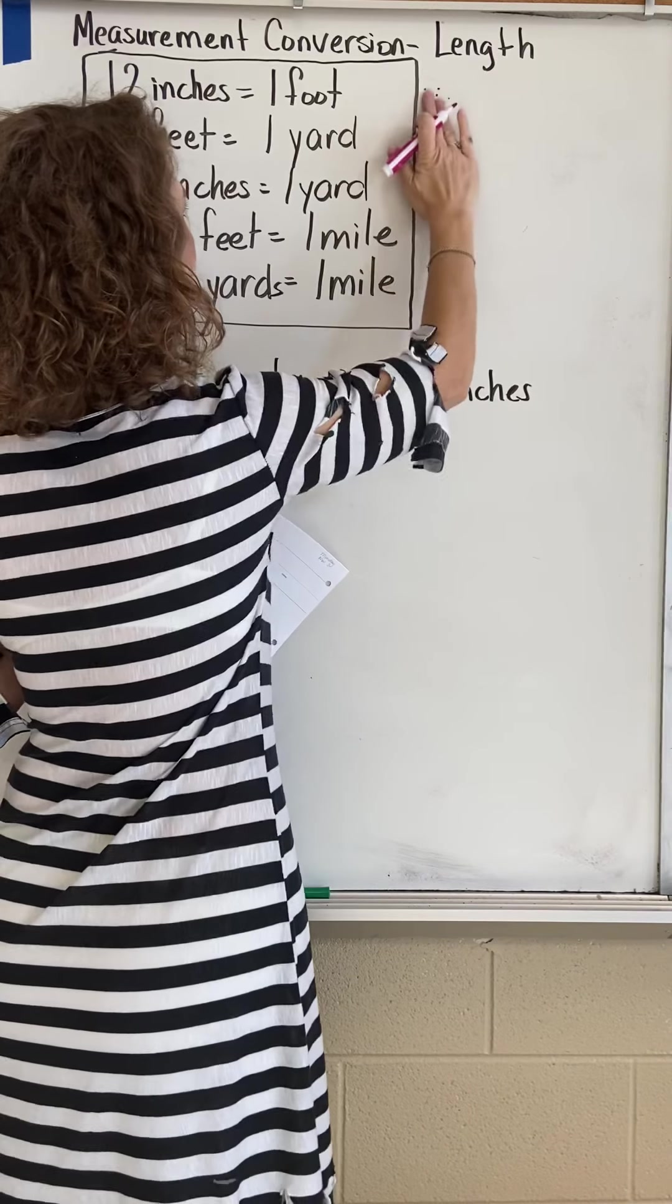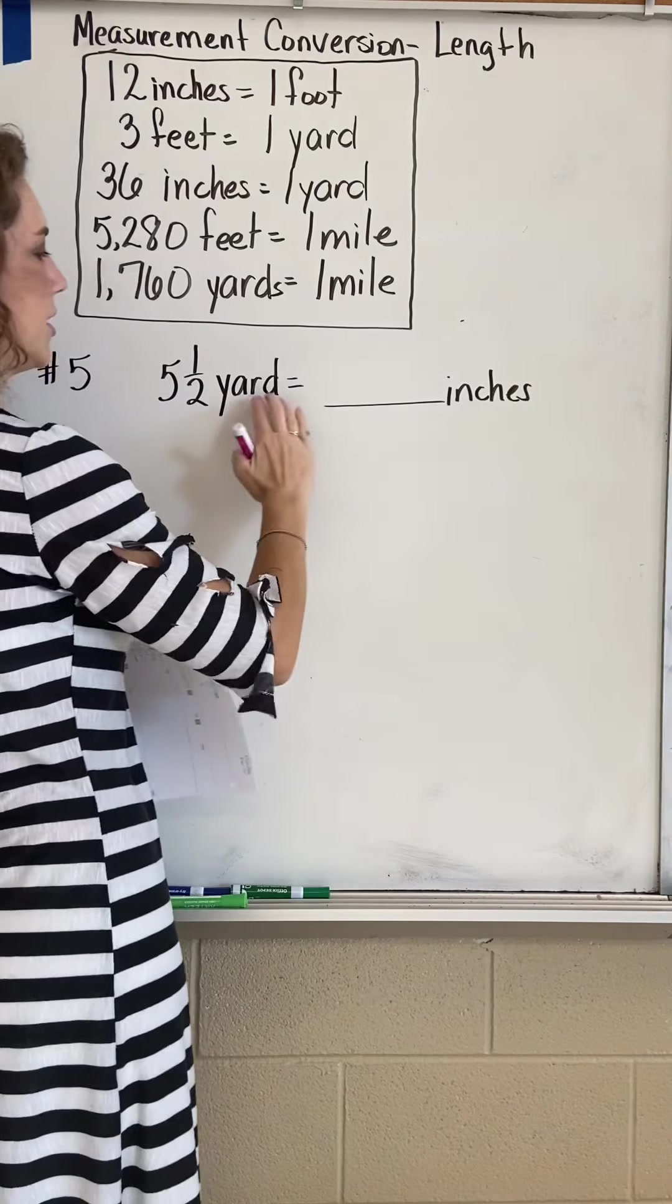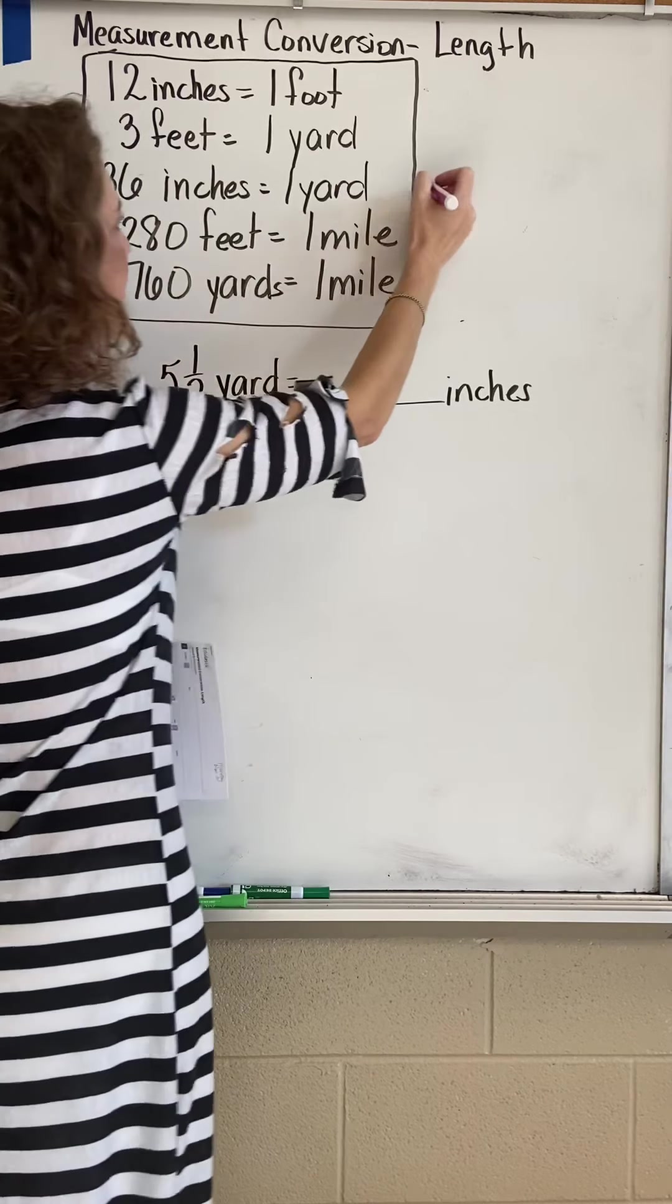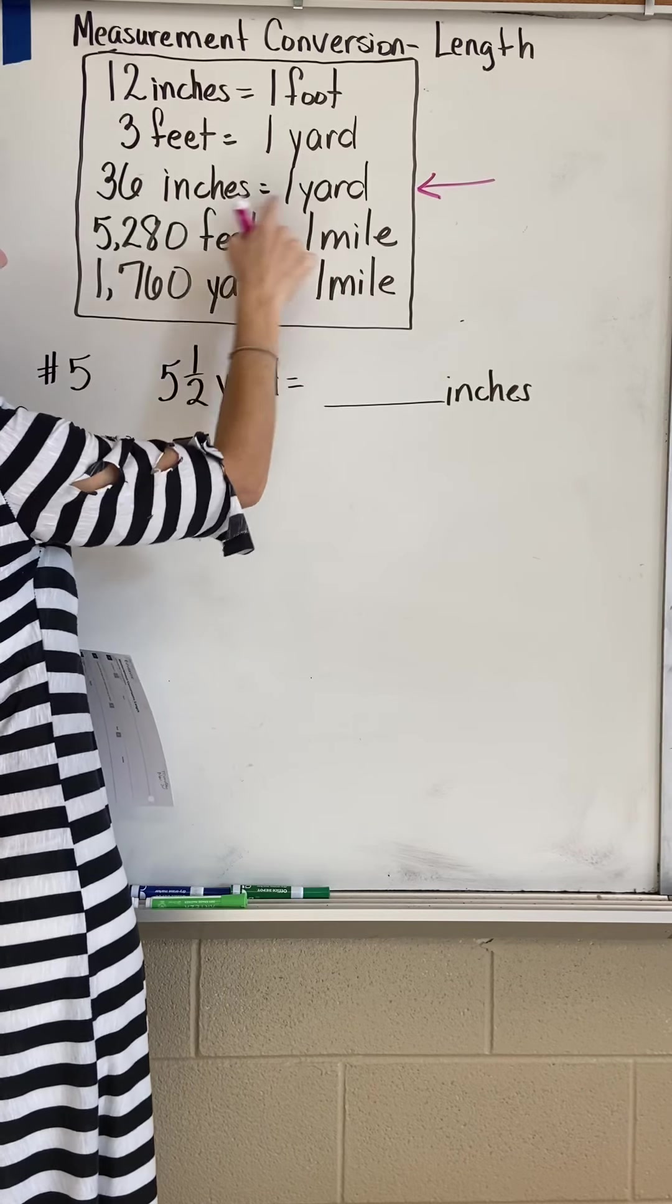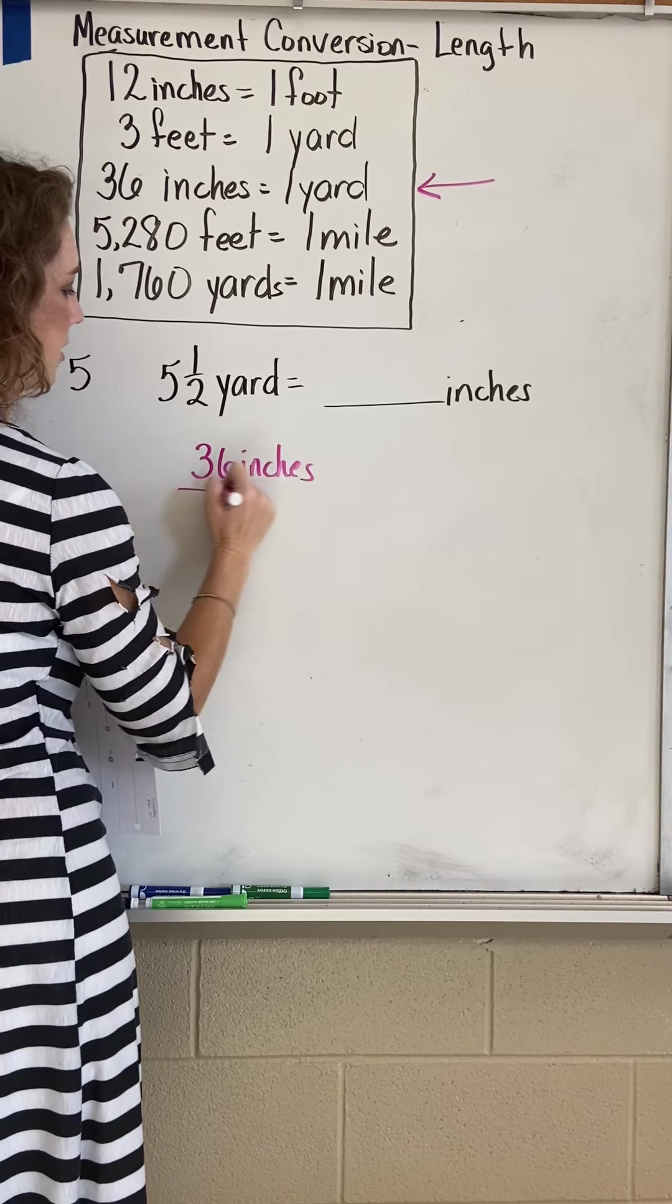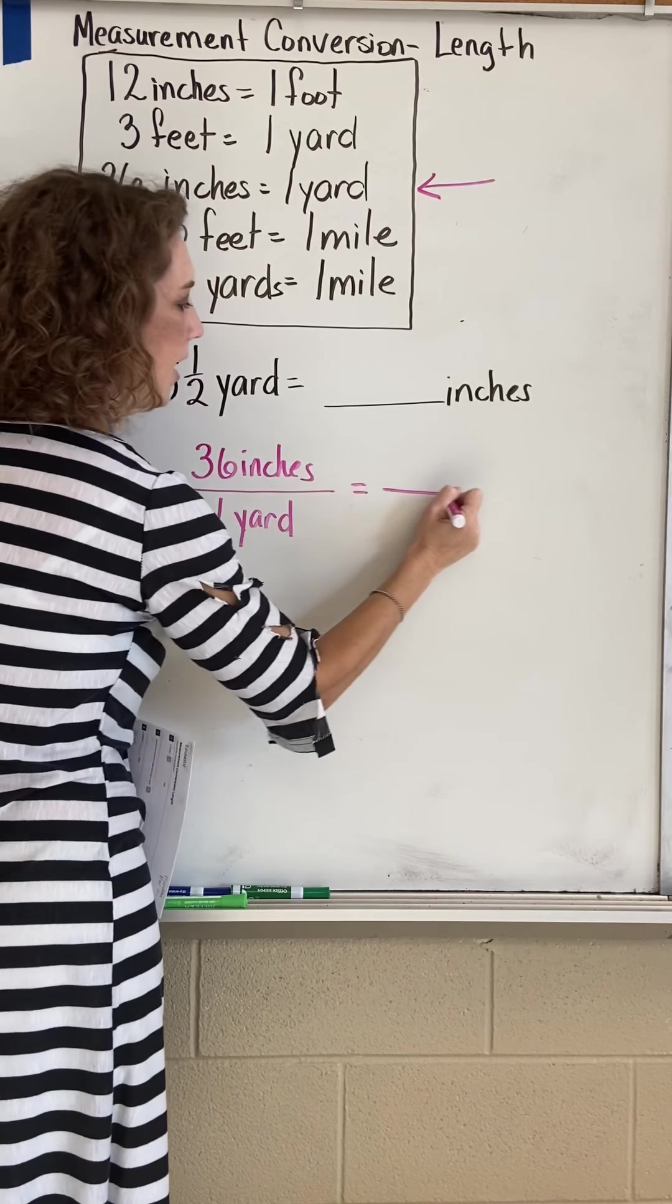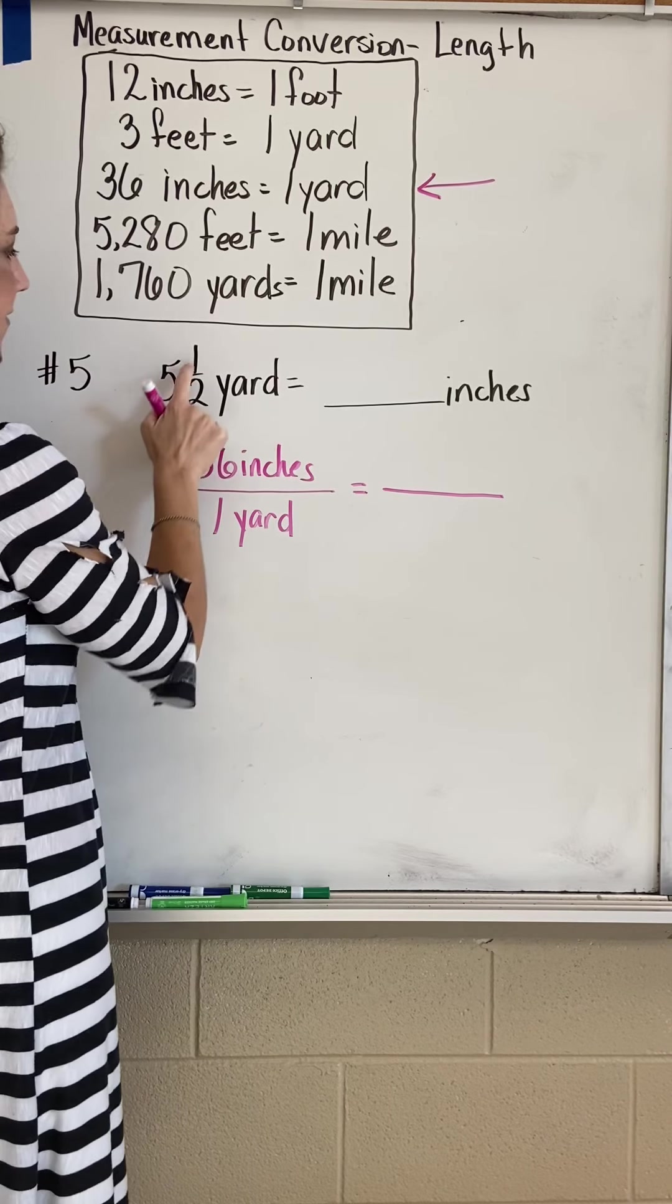We're going to find the comparison that compares yards to inches. This one right here, there's where we're going. So I'm going to make a ratio of that information: 36 inches to one yard equals. Now I'm going to put this on my other side of my proportion. It says five and a half yards.